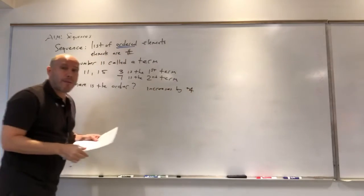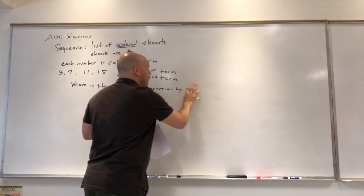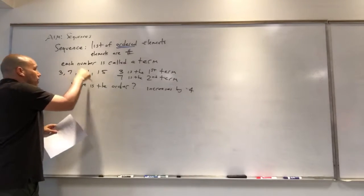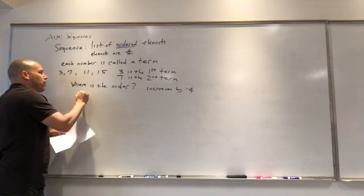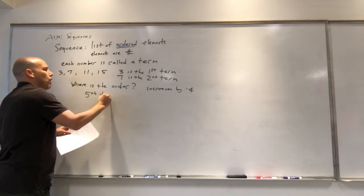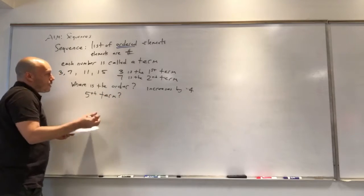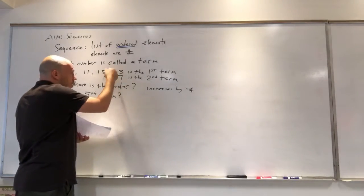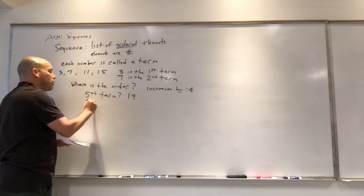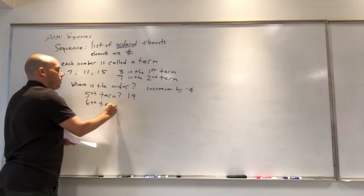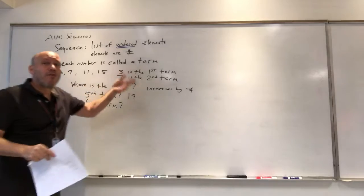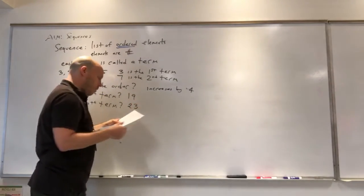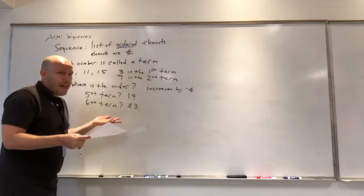What is the order? You say it increases by 4 each time. So I could say: you have the first, the second, the third, the fourth — what is the fifth term? You'd say 15 plus 4 is 19. What's the sixth term? You'd say 19 plus 4 is 23.